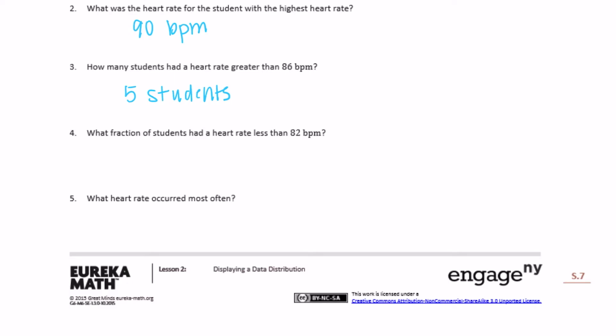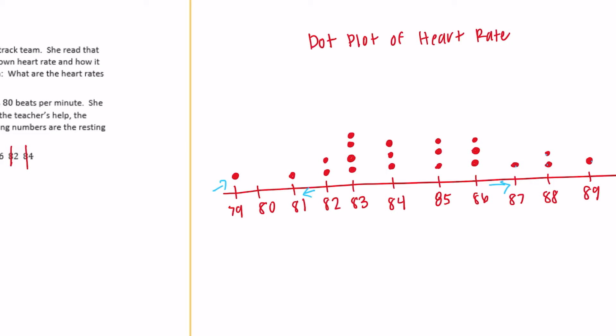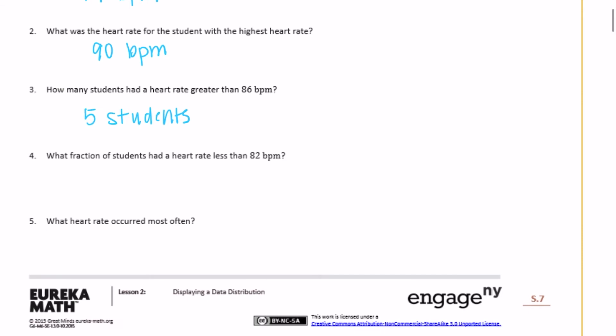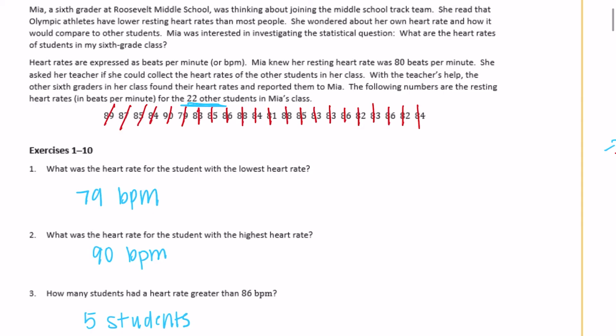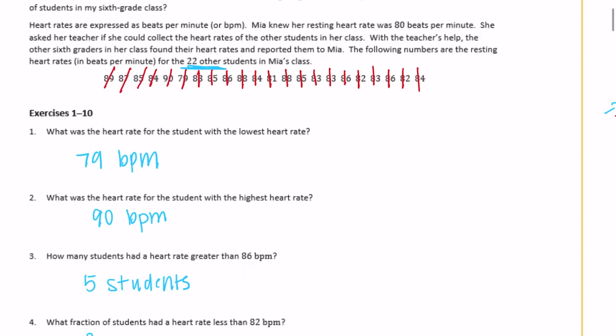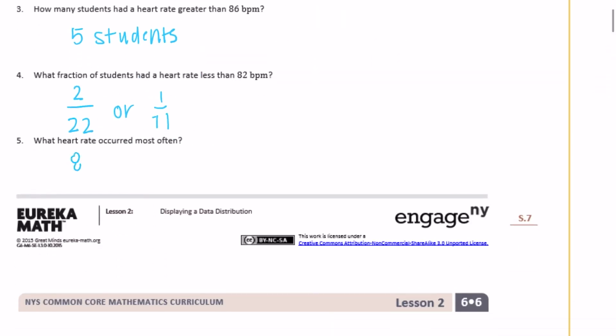What fraction of students had a heart rate less than 82? So we're looking at less than 82, that means not including 82. So just two students had a heart rate of less than 82. And we want to put it in a fraction. So two out of, there were 22 students. So two out of 22, or we can reduce that to one out of 11 students. What heart rate occurred most often? So we're looking for the one that has the most dots. So 83 has the most dots of four. So 83 beats per minute was the most common.